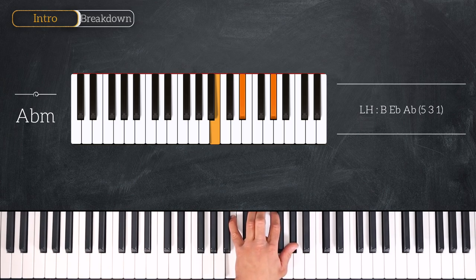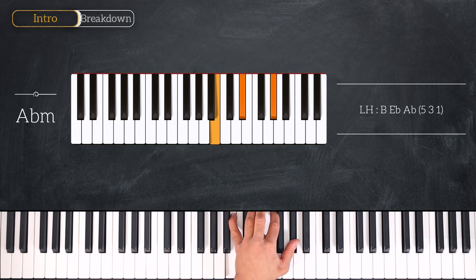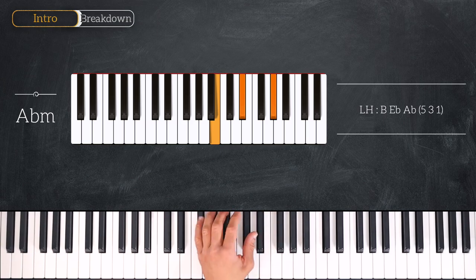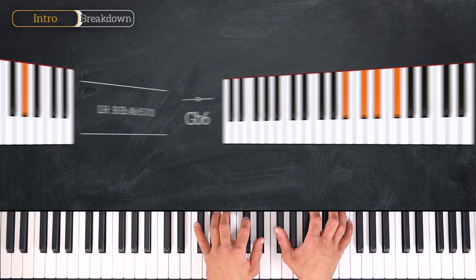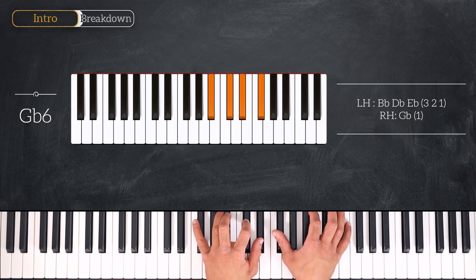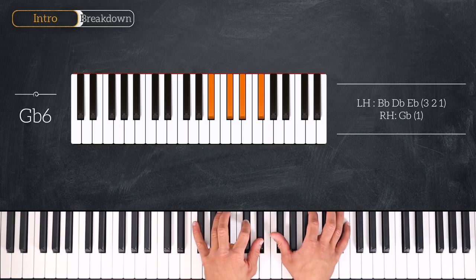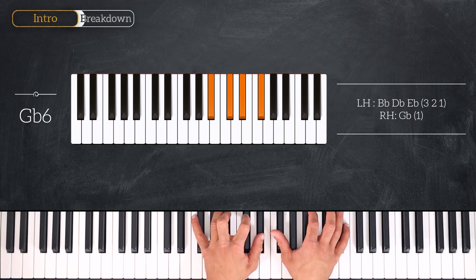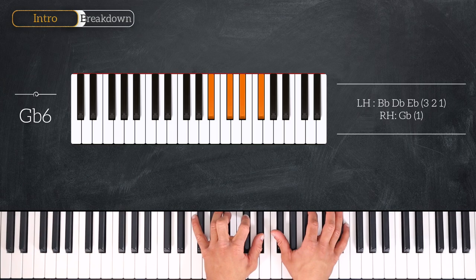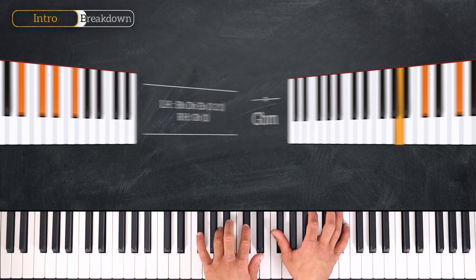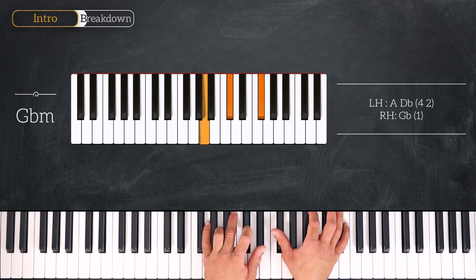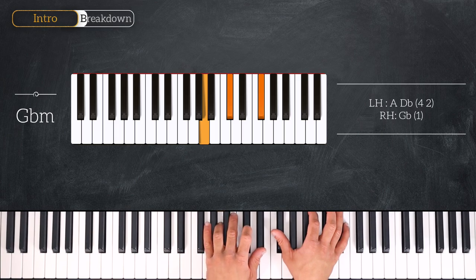And now we'll end playing this G flat six, so here we play B flat, D flat and E flat on the left, G flat on the right. And then we minorize the chord playing G flat minor: A, D flat and G flat on the right hand.